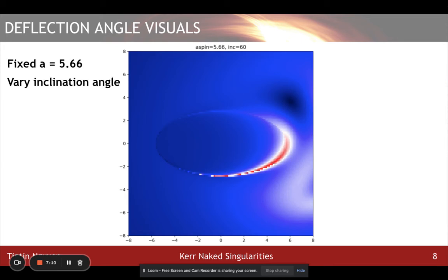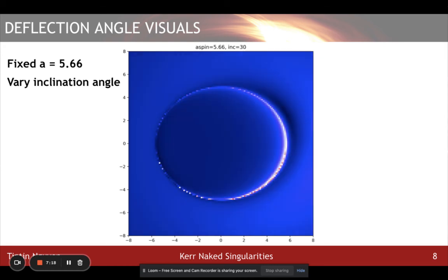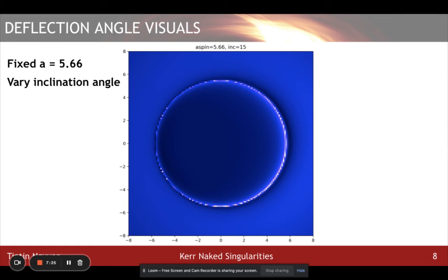Now, I will fix the spin at 5.66 and vary the inclination angle. As the inclination angle changes from edge-on to face-on, we begin to see the projection of the ring singularity clearer, but because the photons are scattered off too strongly, there is no other notable observational signatures.